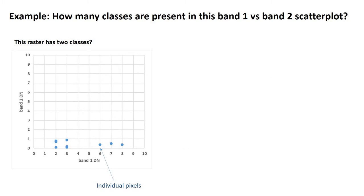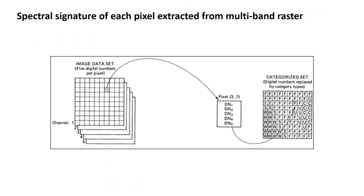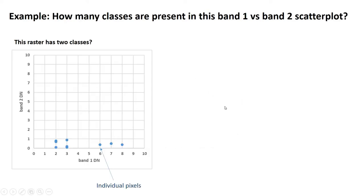So, one way we'll often approach this is to take these digital numbers. Let's take DN1 and DN2. And we'll plot them against each other in a scatter plot. And we can do this in 2D and we can also do this in 5D, but we can't visualize it, of course. So, looking at this scatter plot, we can see that, in fact, this group of pixels seems to cluster together, and this group of pixels seems to cluster together. So, maybe we can say this simple raster example has only two classes.